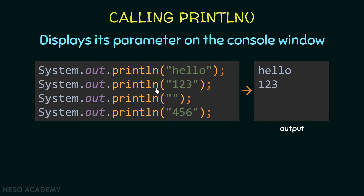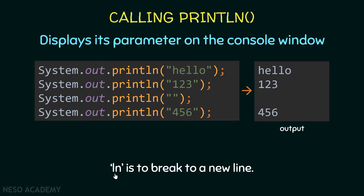Because we are using println, the 'ln' means we go to a new line after printing. So '123' appears on a new line. Then the empty string prints nothing but moves to a new line, and finally '456' is printed on the next line. That is the full output. Remember: println prints the parameter and then breaks to a new line.